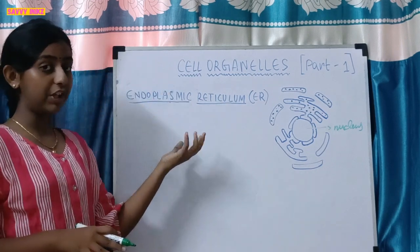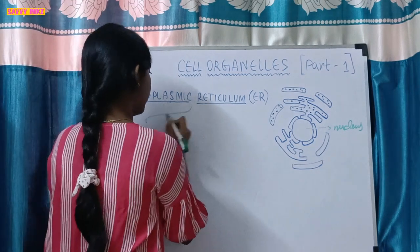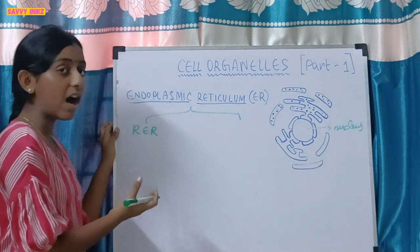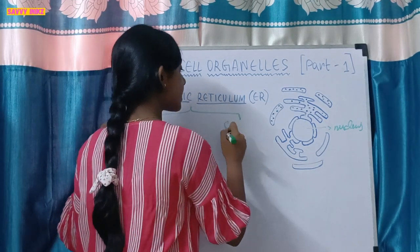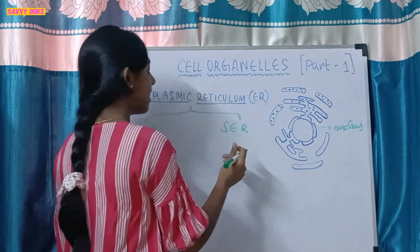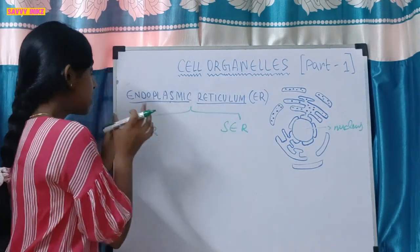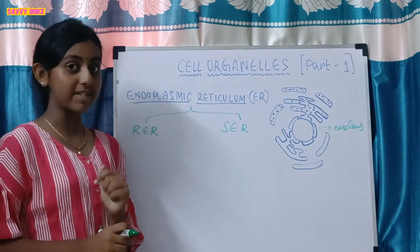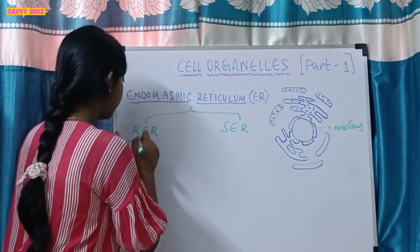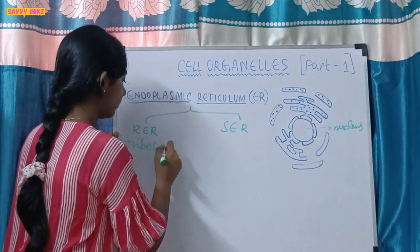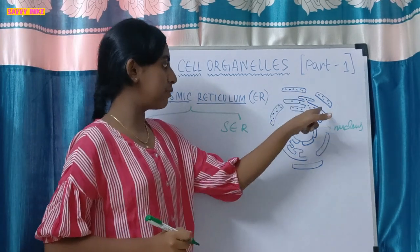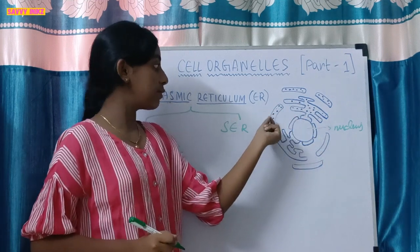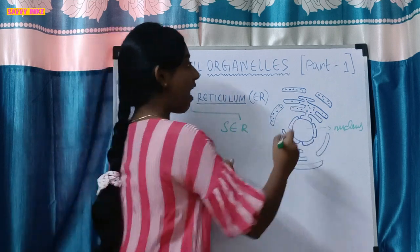This endoplasmic reticulum is of two types. The first type is the rough endoplasmic reticulum, or RER. The second type is the smooth endoplasmic reticulum, or SER. The rough endoplasmic reticulum appears rough under the microscope because it has ribosomes on its surface. As you can see here, the ribosomes are the dot-like structures embedded on the RER that make it look rough.